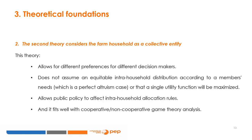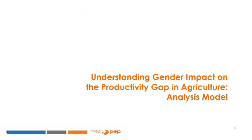The second theory considers the farm household as a collective entity. In this theory, different preferences for different decision makers are assumed. It does not assume an equitable intra-household distribution according to members' needs — which would be the perfect altruism case — nor that a single utility function will be maximized. Public policy is allowed to affect intra-household distribution rules, and it fits well with cooperative and non-cooperative game theory analysis.